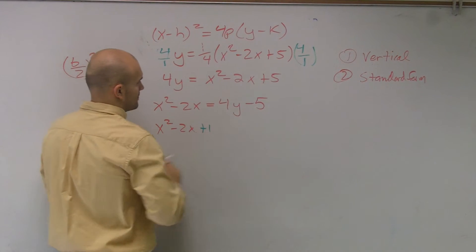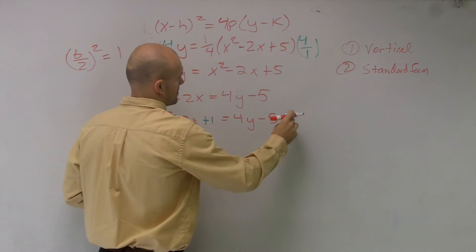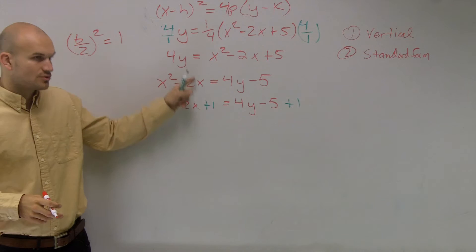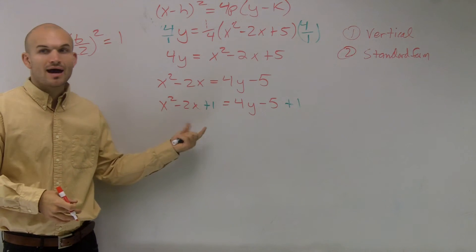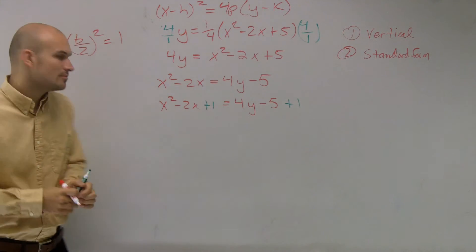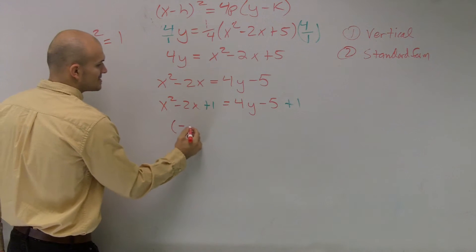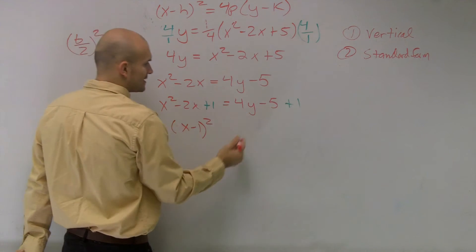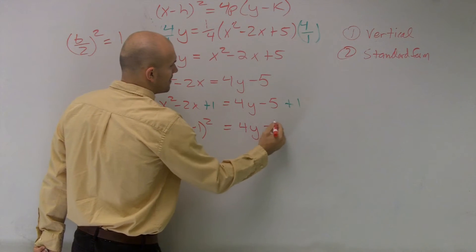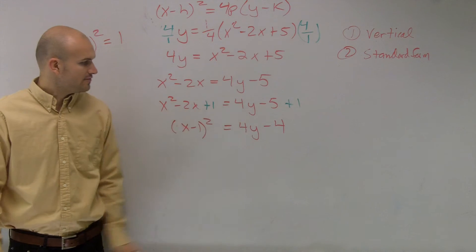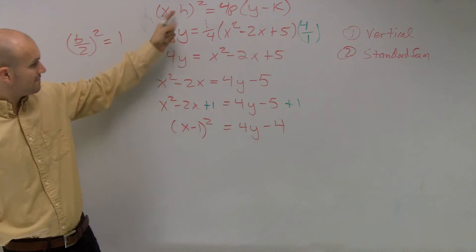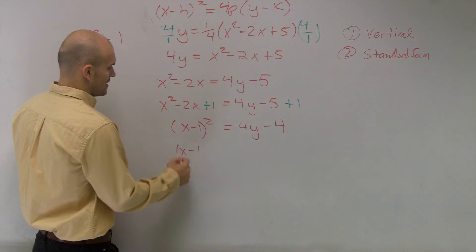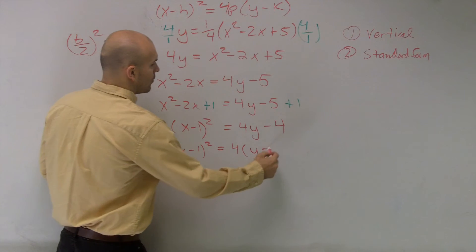I add what I needed to complete the square — took b divided by 2, squared it, and added it to both sides. By completing the square, I can now rewrite the left side as a perfect trinomial: x minus 1 squared. When I factor that, it becomes x minus 1 squared, and I can combine the right side to be 4y minus 4, since negative 5 plus 1 is negative 4. Still, I want it to match the standard form, so I factor out a 4: x minus 1 squared equals 4 times y minus 1.